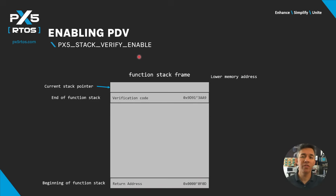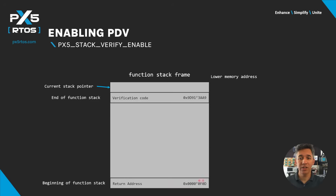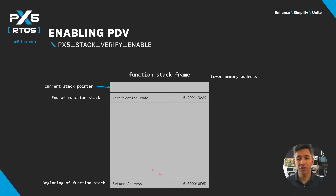When you build PX5 RTOS with px5_stack_verify_enable, all internal PX5 RTOS stack frames are verified during each function call. Each stack frame has an ID, and the function return address is used when possible. Upon entry of the function, the verification code is computed and stored in the stack frame.